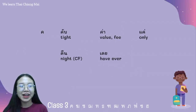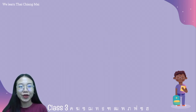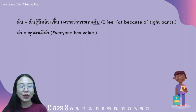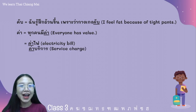The first consonant of low pair is คอควาย. The first words are ครับ, ค่า, แค่, คืน, and เคย. For example, ครับ: ฉันรู้สึกอ้วนขึ้น. The word ค่า has two meanings. The first meaning is value — for example, ทุกคนมีค่า. The second meaning is fee — for example, ค่าไฟ, ค่าบริการ.